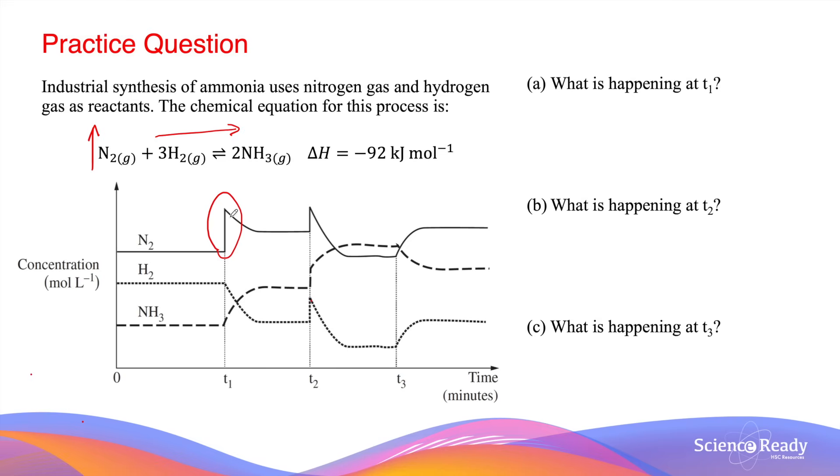Concentrations of nitrogen and hydrogen both decrease, while the concentration of ammonia slowly increases. Another feature to pay attention to in this graph is that the nitrogen and hydrogen concentrations, they decrease to different extents.